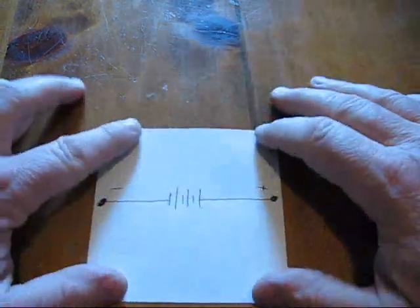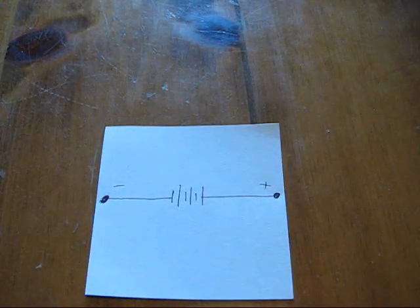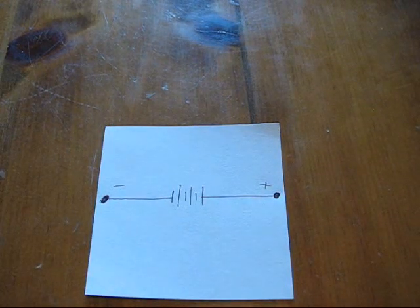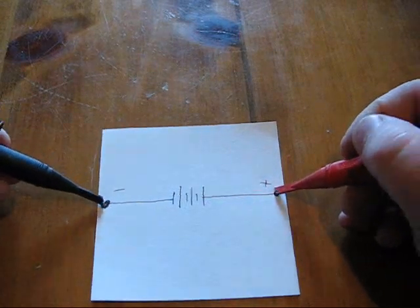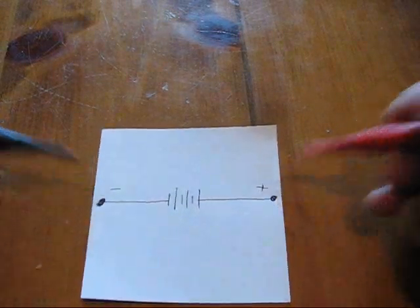Consider a battery. We'll call it 6 volts. If you measure across these points you get 6 volts.